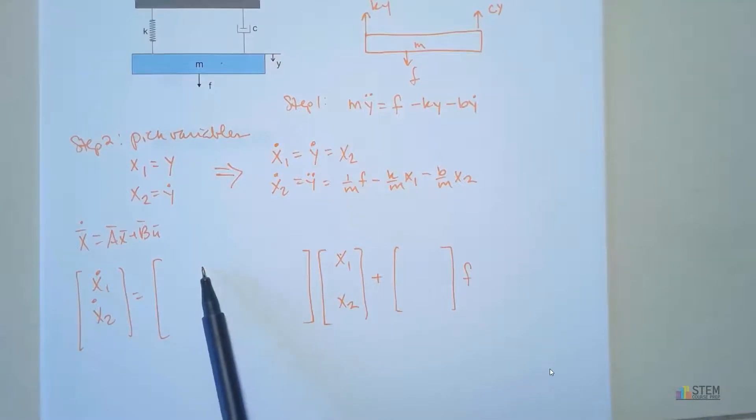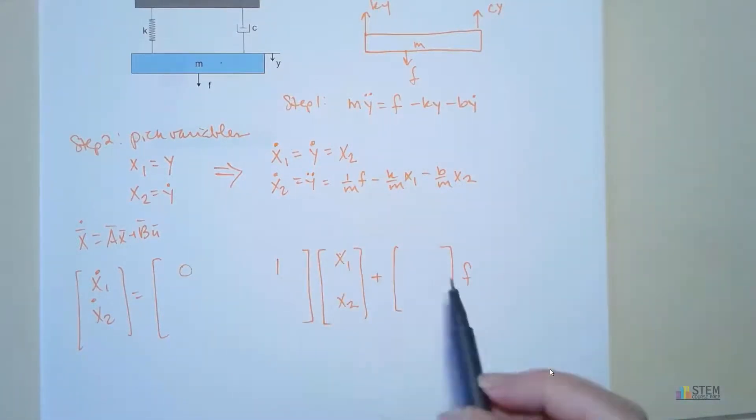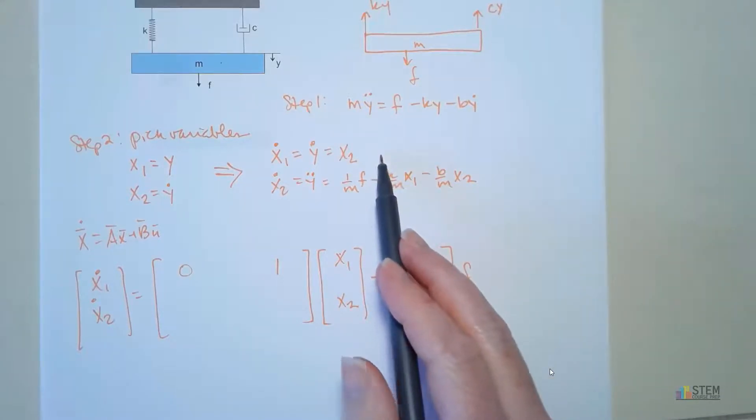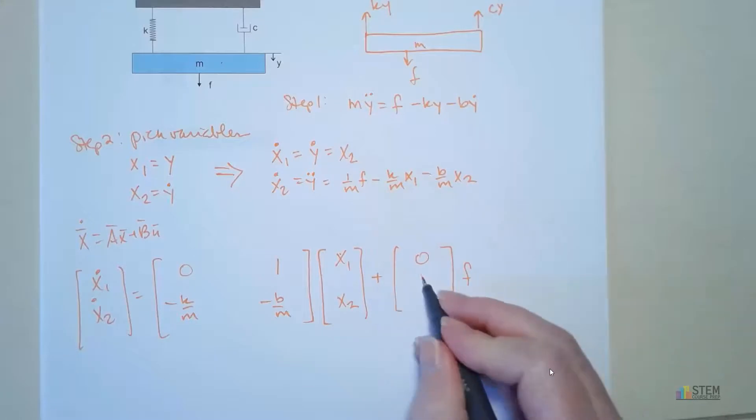Now we need to fill these matrices in. All we're going to do is pull out the coefficients. Do we have an x1 up here? No, we don't have that, so this is zero. x2? Well, we have an x2 right here. Coefficient in front is a one, so we put a one. Now f, we're not multiplying anything by f in this equation for x1 dot, so this goes to zero. Now we repeat the same thing down here. Let's start over here on the second term though. We've got negative k over m - that's our coefficient for x1, so that goes in here. This element here is going to be the coefficient for x2, so that's negative b over m. And then finally f, we have one over m, so that goes there.